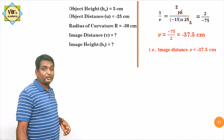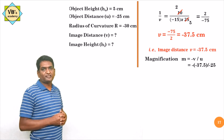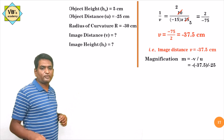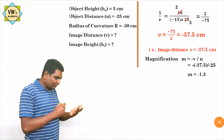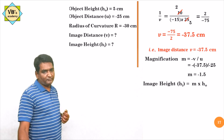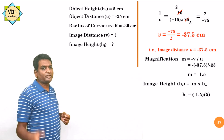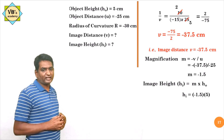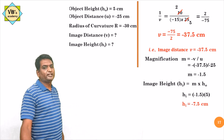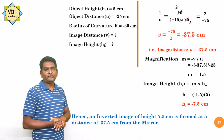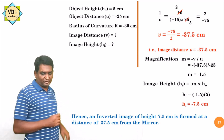From the magnification formula M = minus V/U = minus(minus 37.5)/(minus 25) = minus 1.5. Image height Hi = M × H0 = minus 1.5 × 5 = minus 7.5 centimeters. So an inverted image of height 7.5 centimeters is formed at a distance of 37.5 centimeters from the mirror.